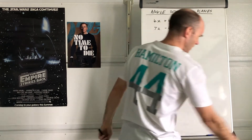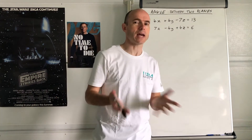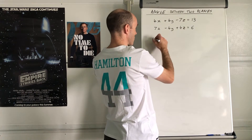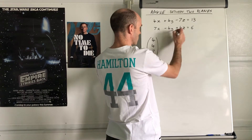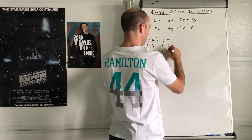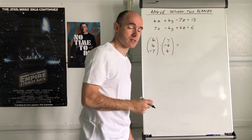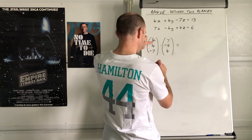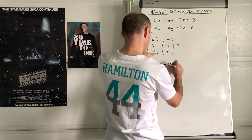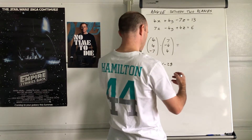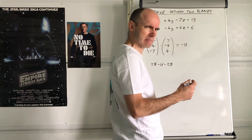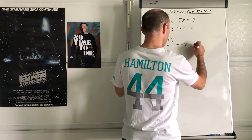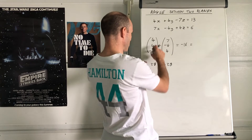So what do you do? Scalar product again, with vectors. The normal to the first plane is (4, 4, -7) and the normal to the second plane is (7, -4, 4). All you do is find the scalar product between the two normals. The scalar product is 28 - 16 - 28, which gives negative 16. It's a negative number, which means the angle is going to be obtuse.